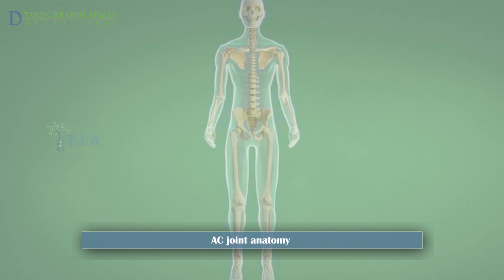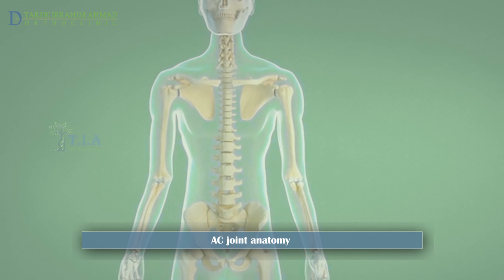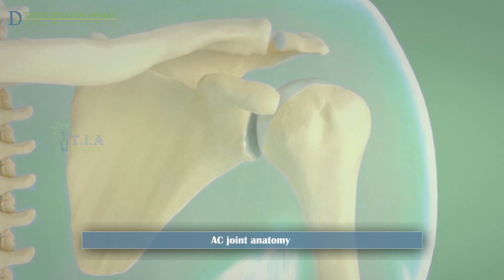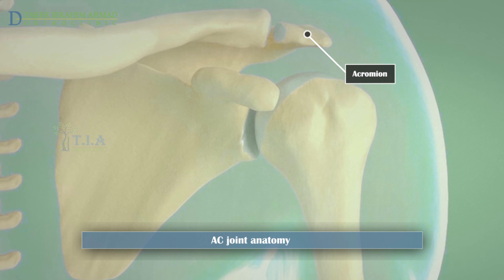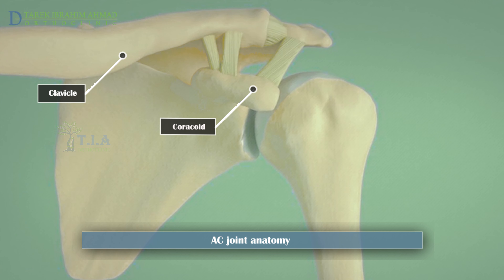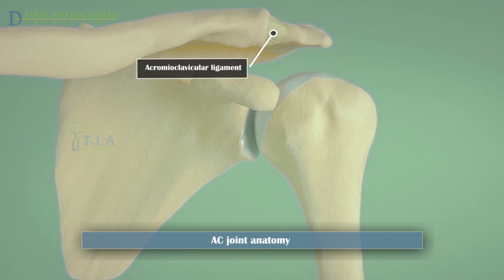Acromioclavicular joint dislocation. The acromioclavicular joint is the point where the clavicle meets the scapula. The process extending from the scapula where it meets the clavicle is known as the acromion. Another bony process located below the clavicle is called the coracoid.